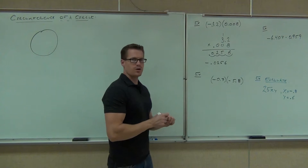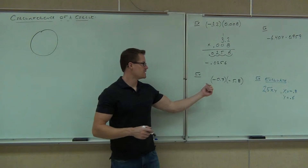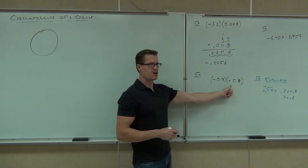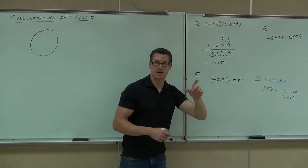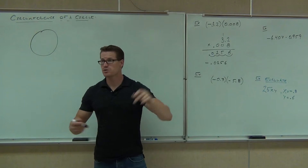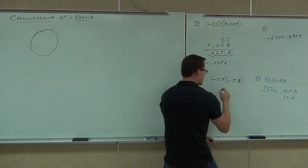On our first example, we've got negative 0.7 times negative 5.8. That's a negative times a negative. Negative times a negative is a positive. So we know it's going to be positive. Let's just do the multiplication.